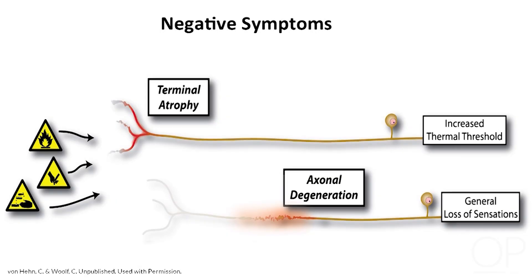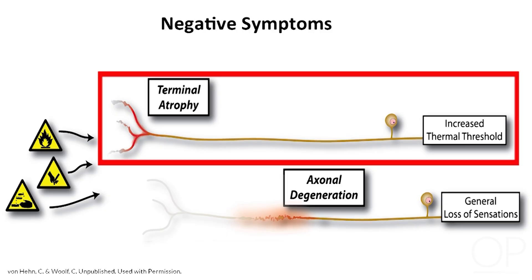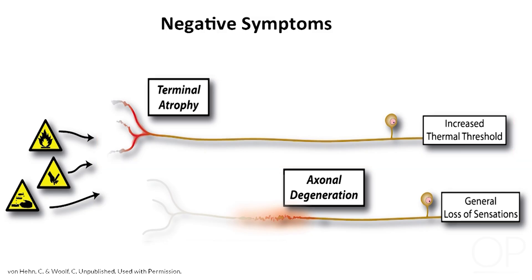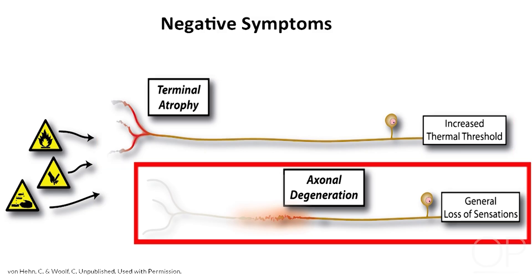We'll start off in the case of neuropathic pain by looking at negative symptoms — the loss of some function. In the case of damage to the peripheral nervous system, this could either be terminal atrophy, for example in patients with diabetic neuropathy, as well as axonal degeneration, which may occur after trauma, invasion of a nerve by a tumour, or compression.